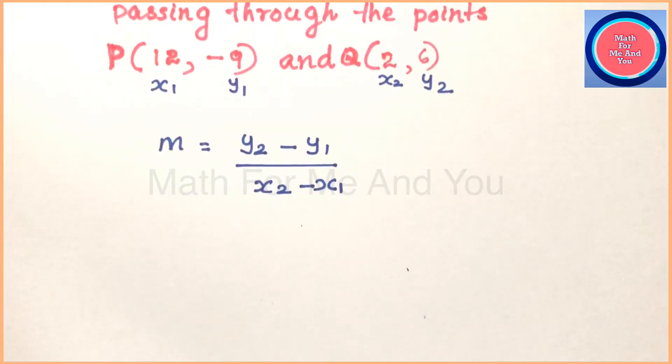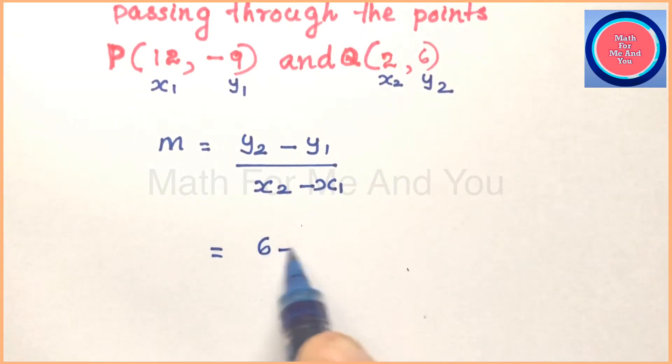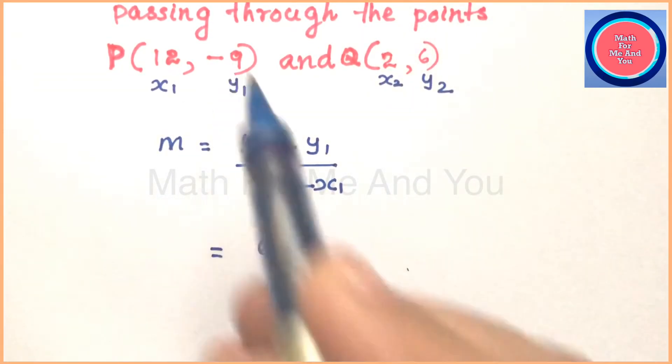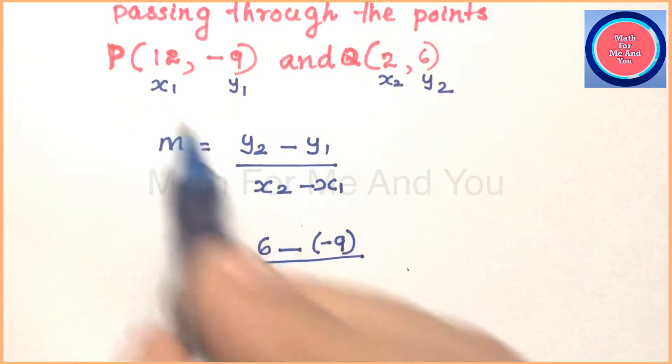x1, y1, x2, y2 already we have marked, so just replace with the numbers. y2 is 6, 6 minus y1, which is negative 9, over x2, which is 2, minus x1 is 12.